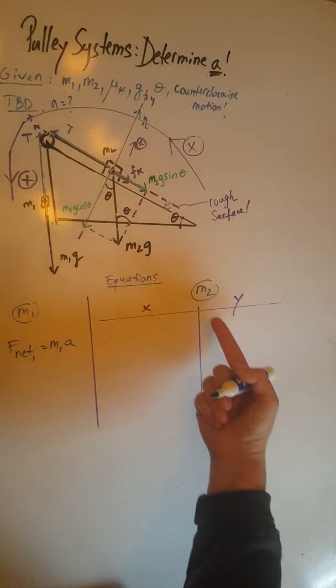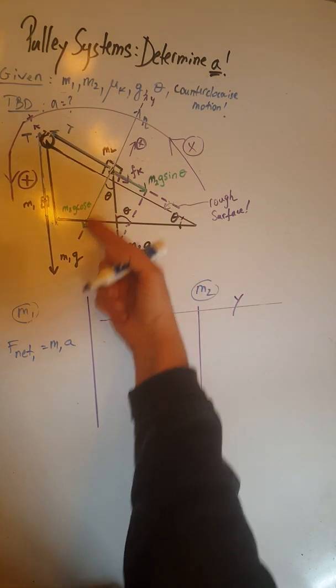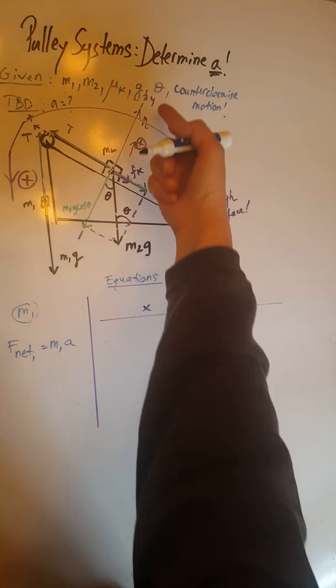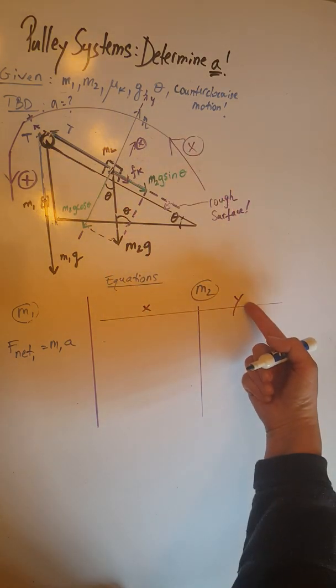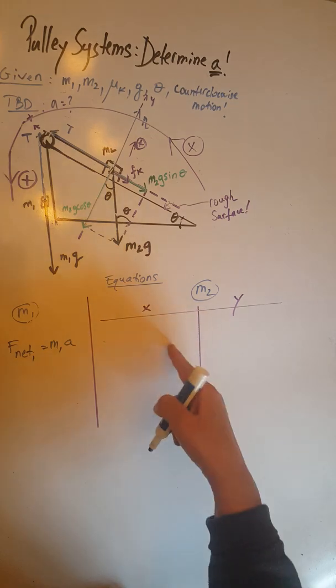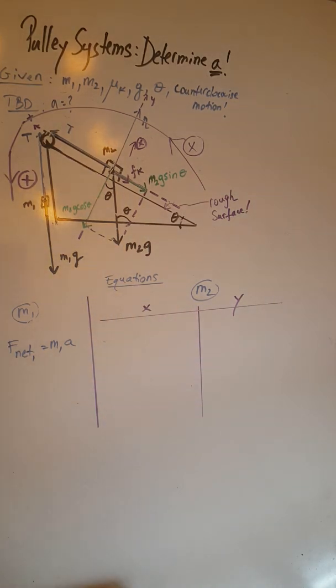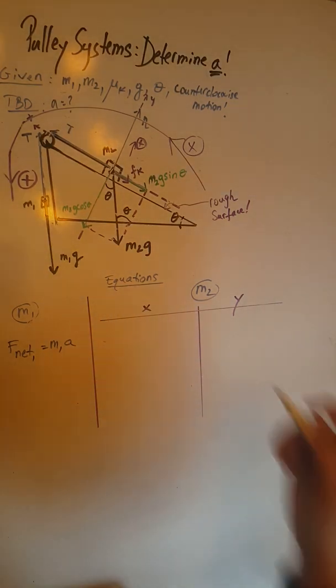However for m2, we are going to have forces going perpendicular to the surface in the y direction and parallel to the surface in the x direction, so we are going to have an F net 2y and we are going to have an F net 2x.